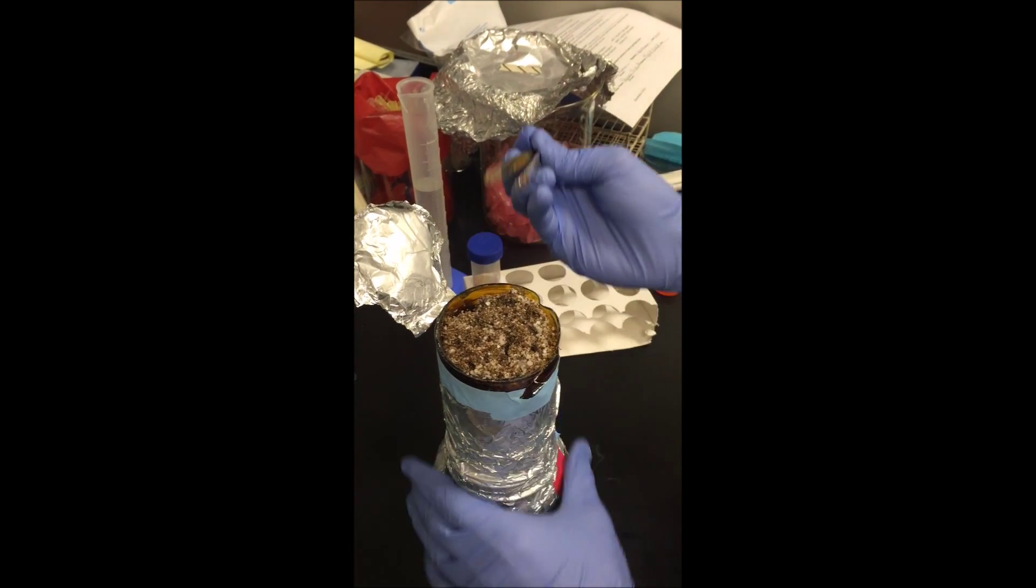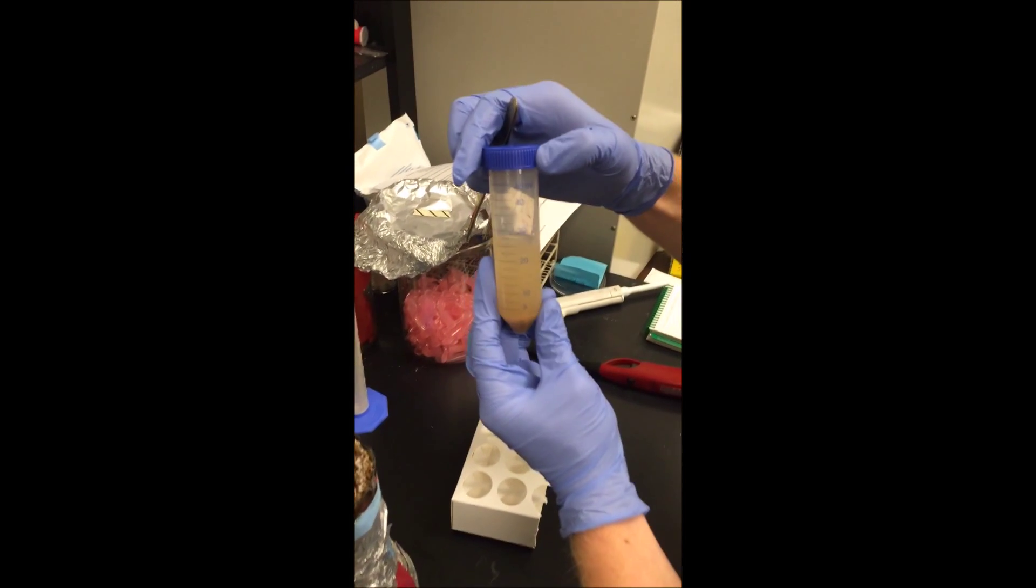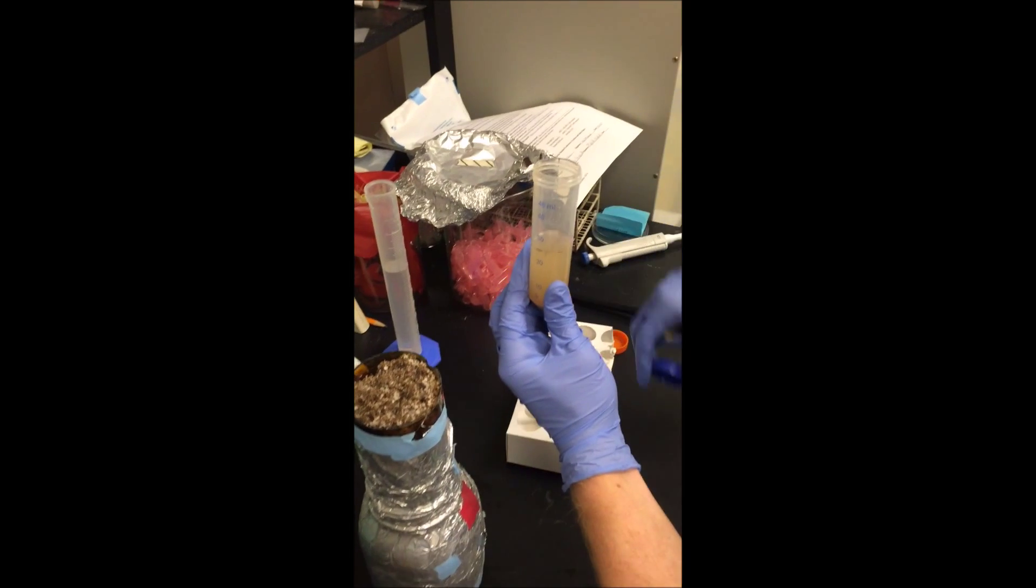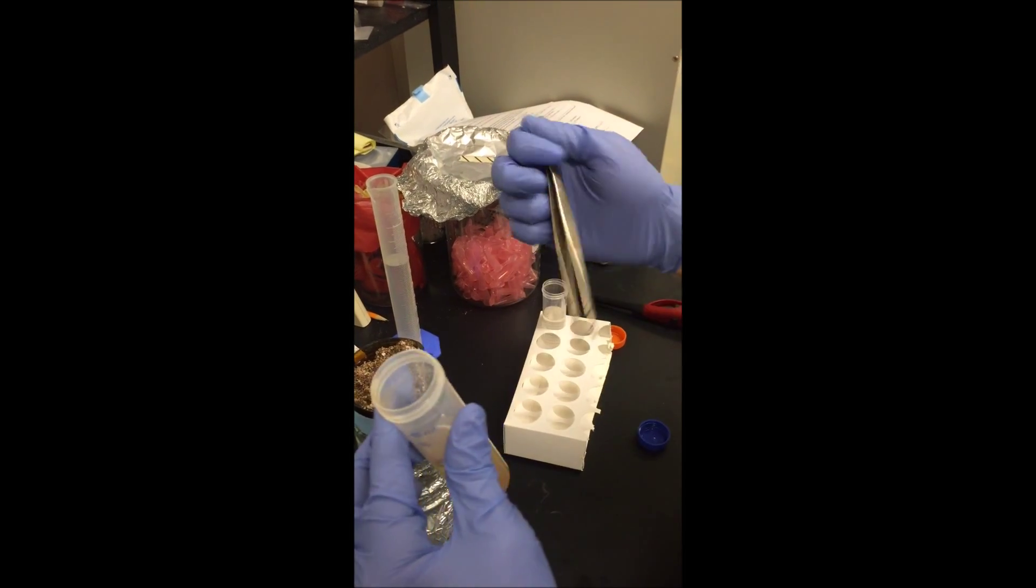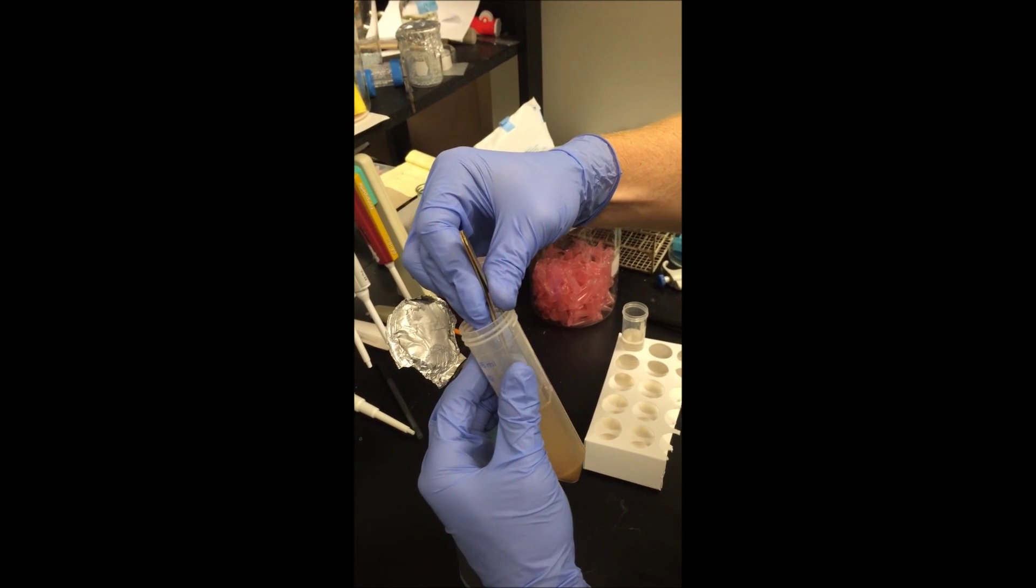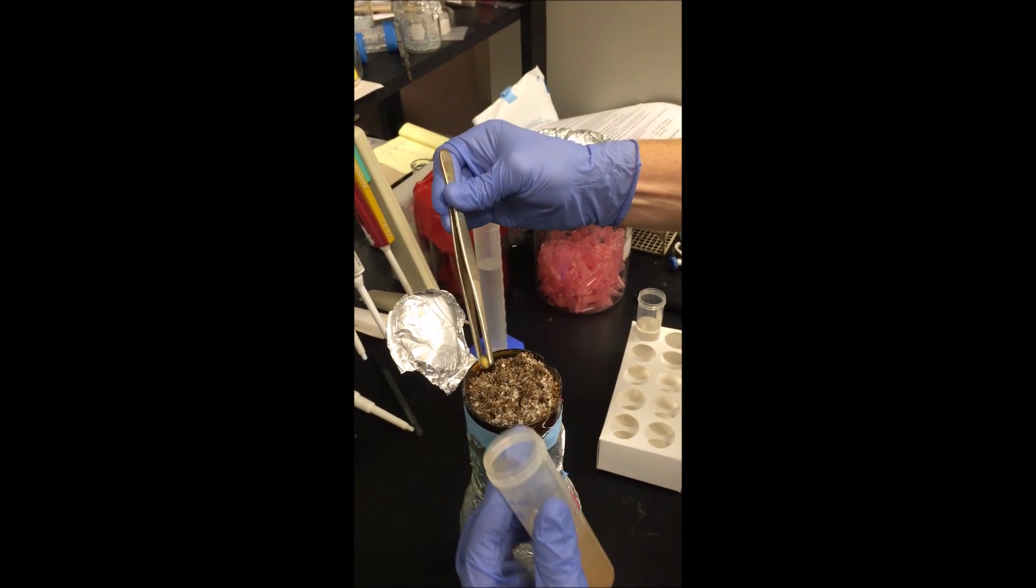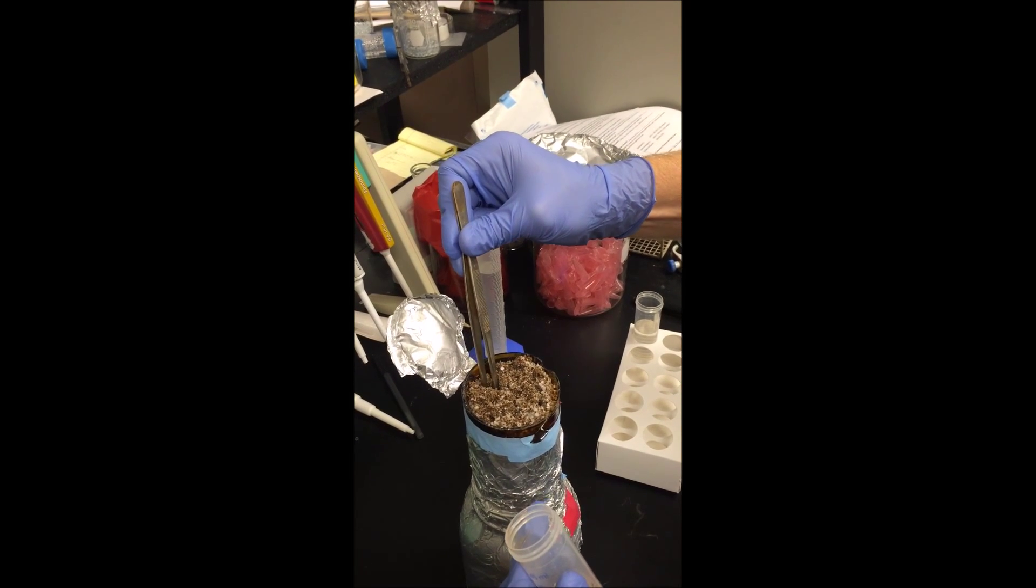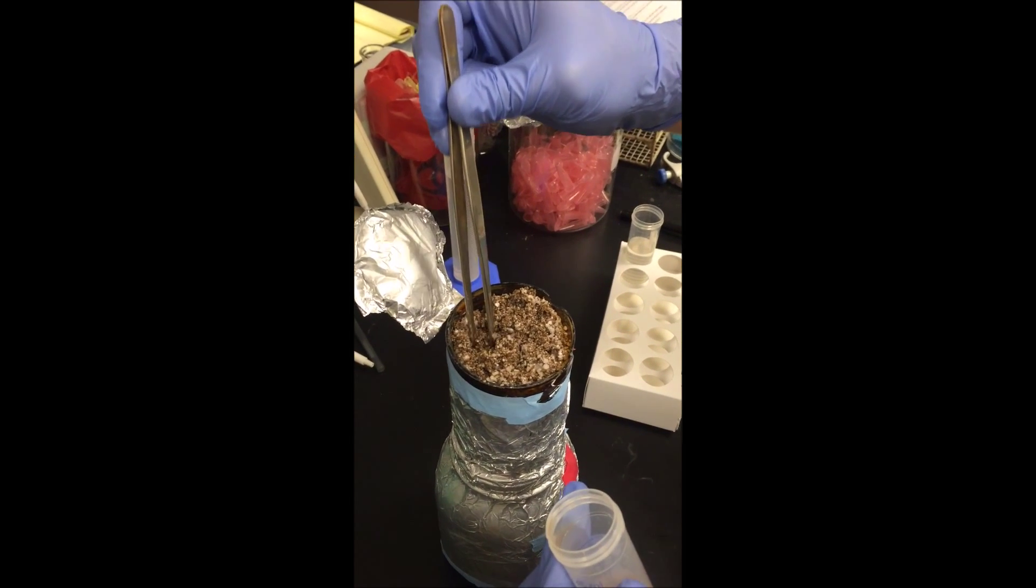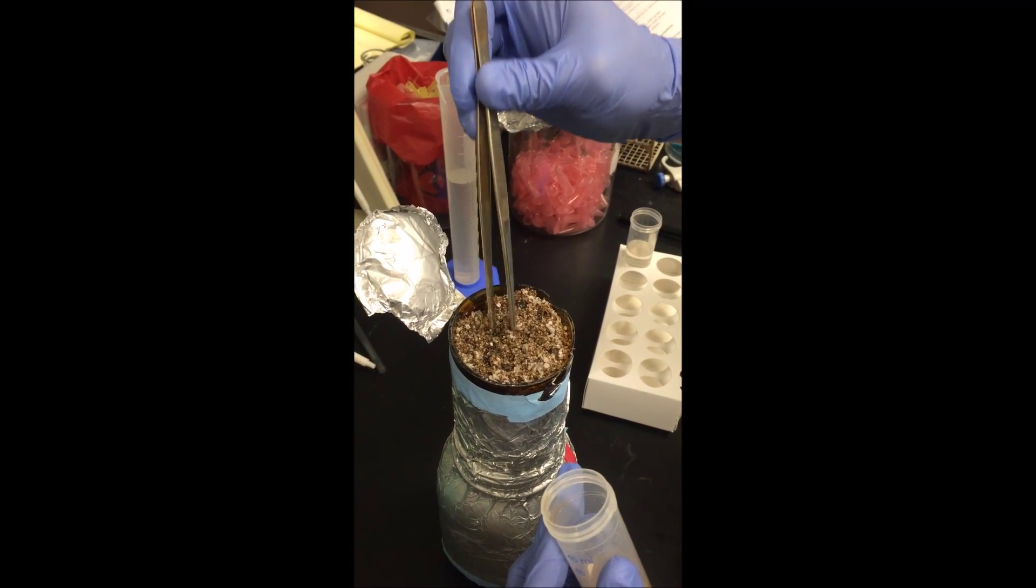And from here, you're going to take the conical tube that has your seeds and your liquid soil slurry in it. And one by one, you're going to transfer three seeds from the conical into the liner jar. And you're going to plant these guys about half an inch below the surface.